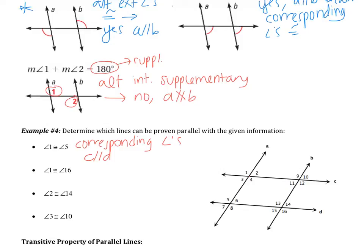The second bullet point: angle 1 is congruent to angle 16. First, what is my transversal? The two angles have to touch the same transversal. Angle 1 touches lines A and C; angle 16 touches lines B and D. There's no common line — there's no transversal. If there's no transversal, then I cannot prove that any lines are parallel. It could be that A and B are parallel, or C and D are parallel, but we don't have enough information to prove lines parallel.